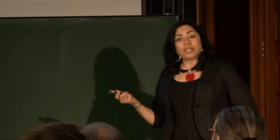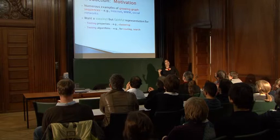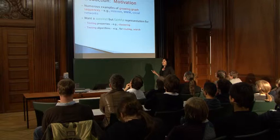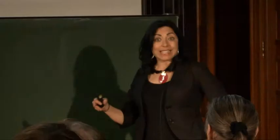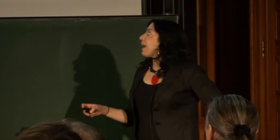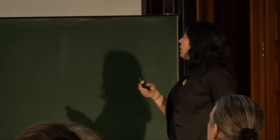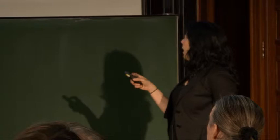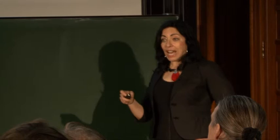As we learned last time, there are many examples of growing graph sequences: the Internet, the World Wide Web, large online social networks. We want a succinct but faithful representation of those networks so that we can test properties such as clustering, and so that if we wanted to do page rank, we would have a way of sampling the graph and calculating page rank on a sample, or on something that was some kind of a limit of the graphs. We're only going to deal with dense graphs — we do have some results for things like Z_d, but we don't have any results for something like a preferential attachment graph.